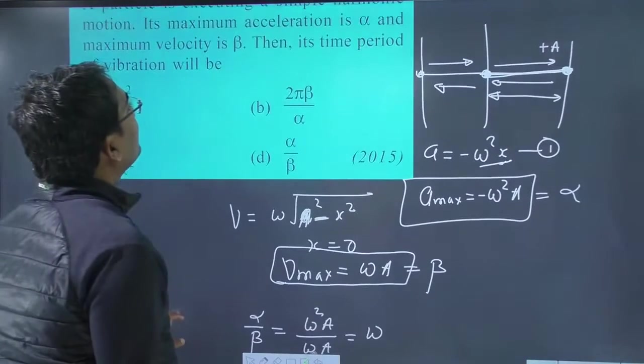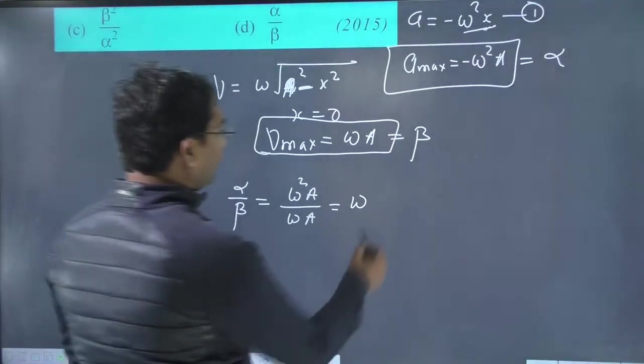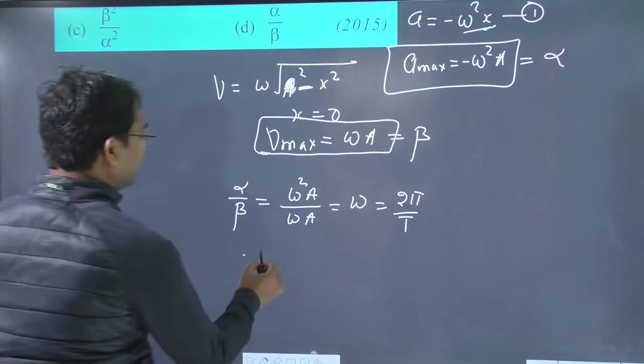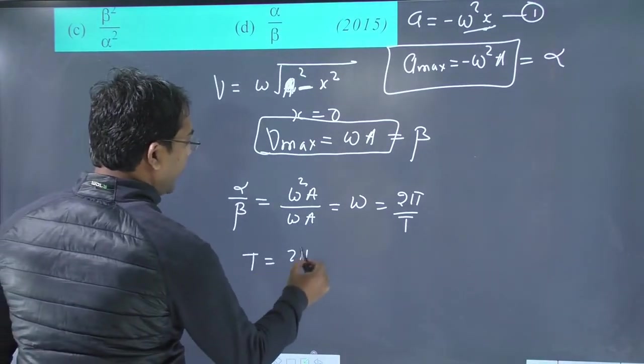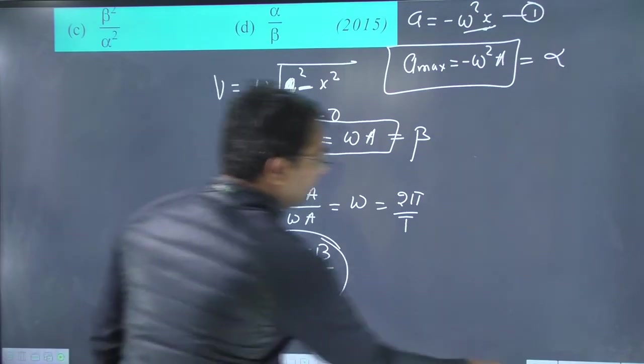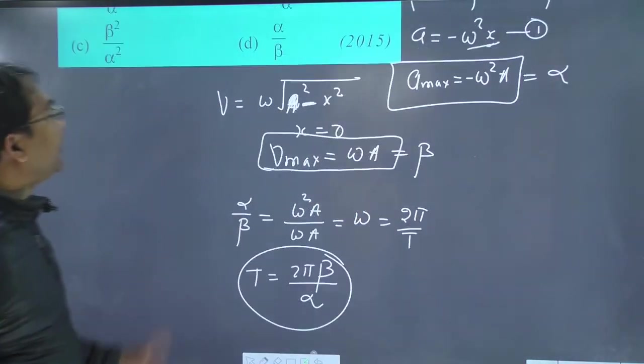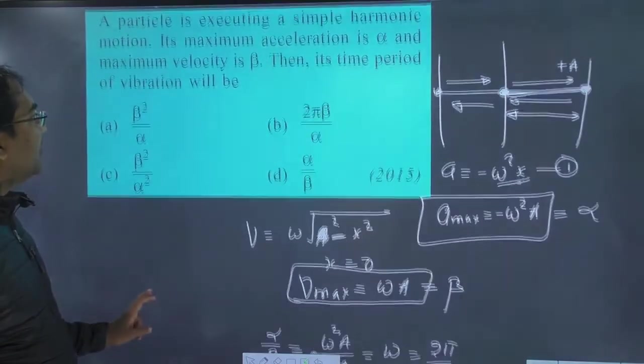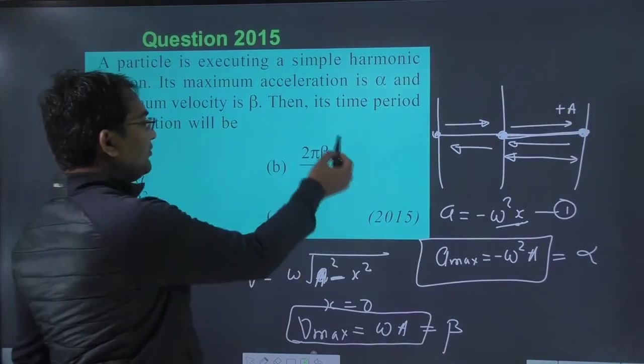Hamein kya chahiye. Time period chahiye na. Dekho to. Omega is equal to hota hai 2 pi by T. Time period ki value aa jayegi 2 pi beta upon alpha. This is the final solution. Time period itna aa jaye ga. 2 pi beta upon alpha. This is the final solution. B.